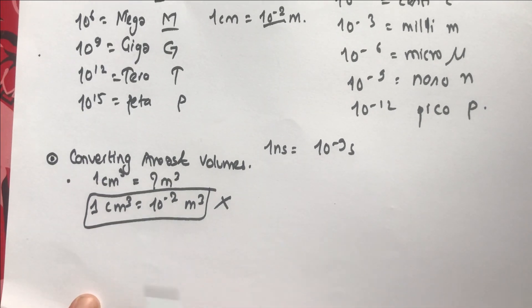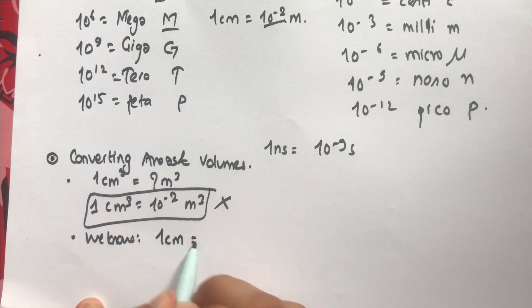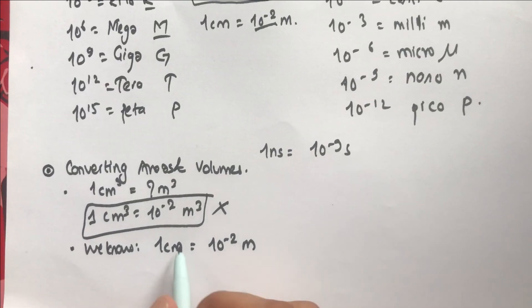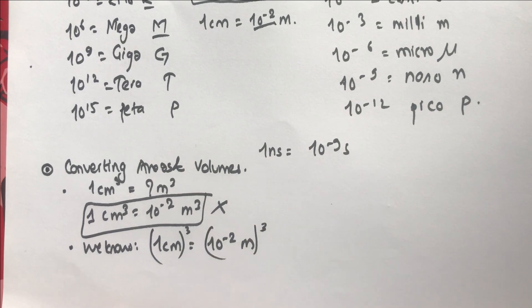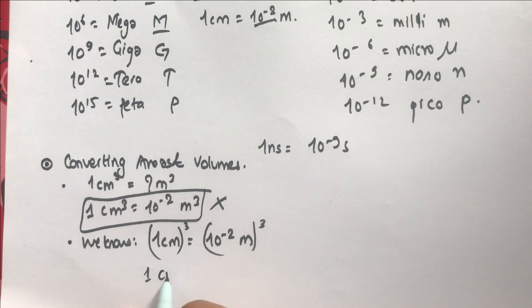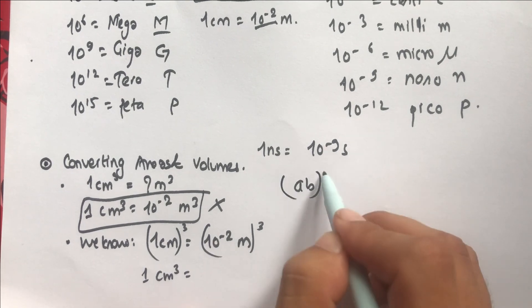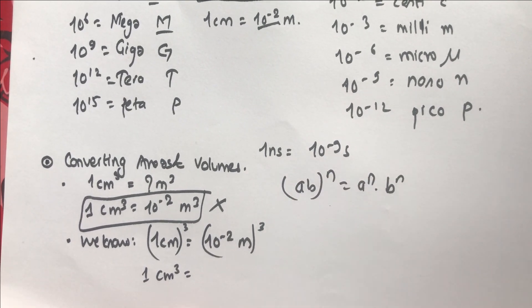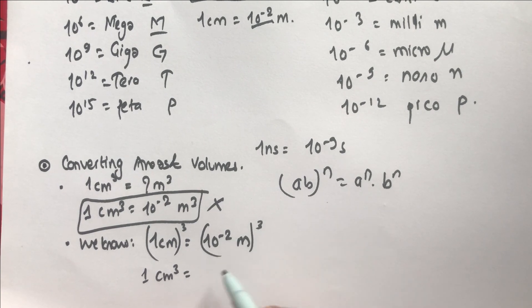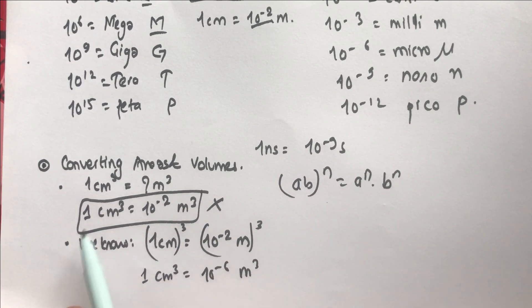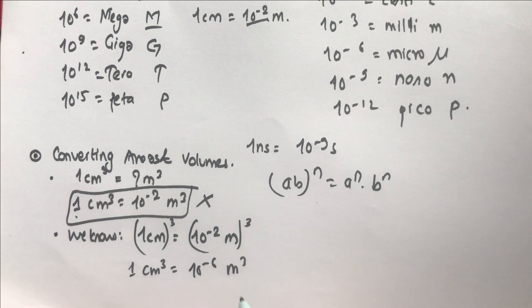The correct approach: we know that 1 cm = 10⁻² m. To find cm³, we cube both sides. On the left, 1³ = 1 cm³. On the right, using the rule (ab)ⁿ = aⁿ·bⁿ, we get (10⁻²)³ m³ = 10⁻⁶ m³. So 1 cm³ = 10⁻⁶ m³, not 10⁻² m³. You have to cube the entire conversion factor.